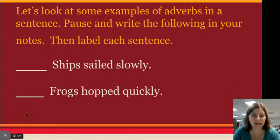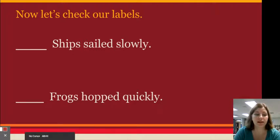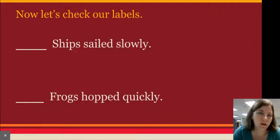All right, let's continue. Now let's check our labels. Ships sailed slowly. Let's see how we should have labeled this sentence. Ships sailed slowly. What sailed slowly? Ships. That's going to be our subject.